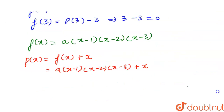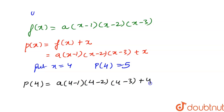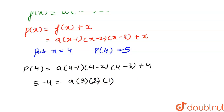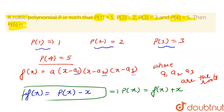Now we will use our fourth relation: p(4) = 5. Putting x = 4, we get p(4) = a·(4-1)·(4-2)·(4-3) + 4 = 5. Shifting +4 to the left-hand side: a·3·2·1 = 1, so 6a = 1, giving a = 1/6.